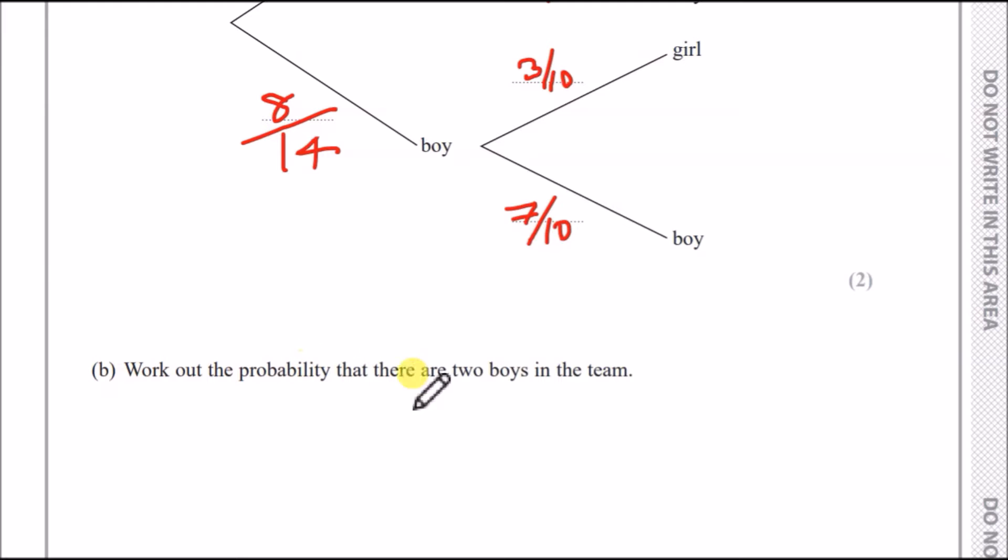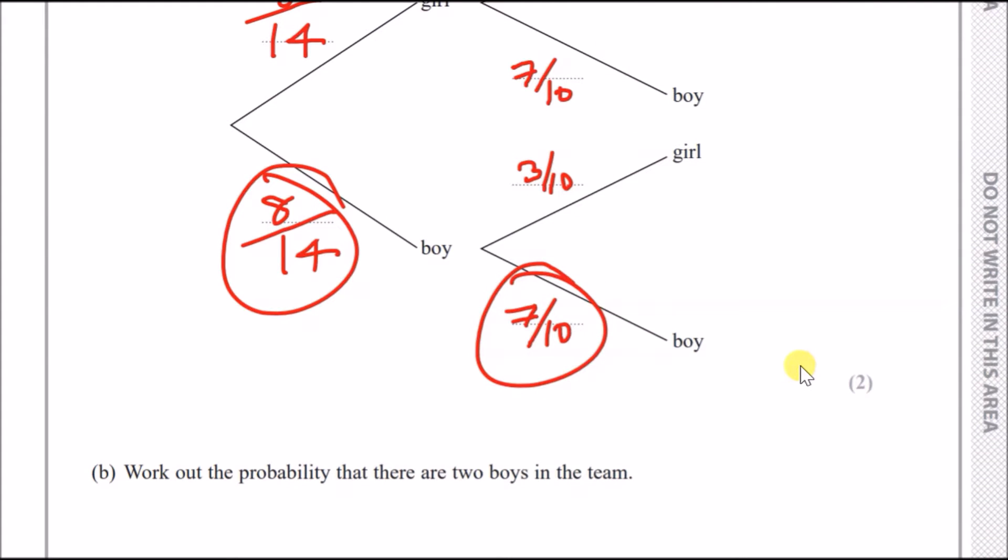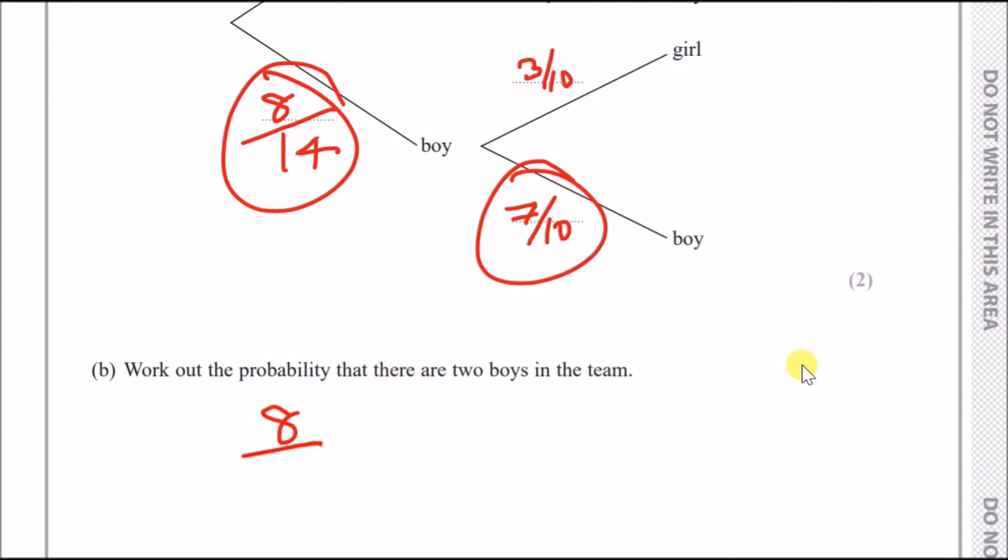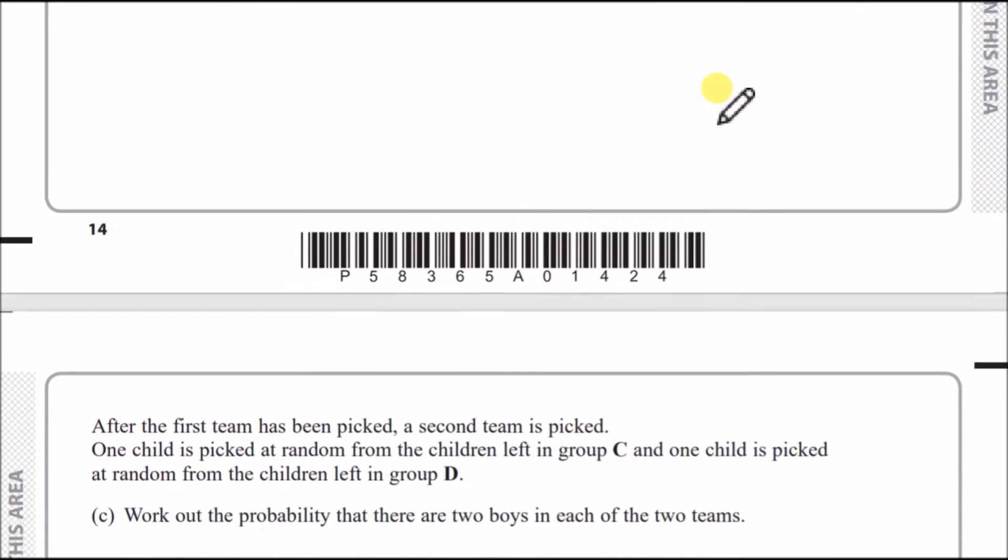Now, work out the probability that there are two boys in a team. For two boys in a team, you just follow the boy tree. In other words, you go through here. So the result will literally just be eight over 14. And when you chain things up, you multiply. Eight over 14 times seven over 10. And conveniently, you can put this in your calculator. Eight over 14 times seven over 10, I got two fifths. That's my answer. Just leave it as a fraction, guys.